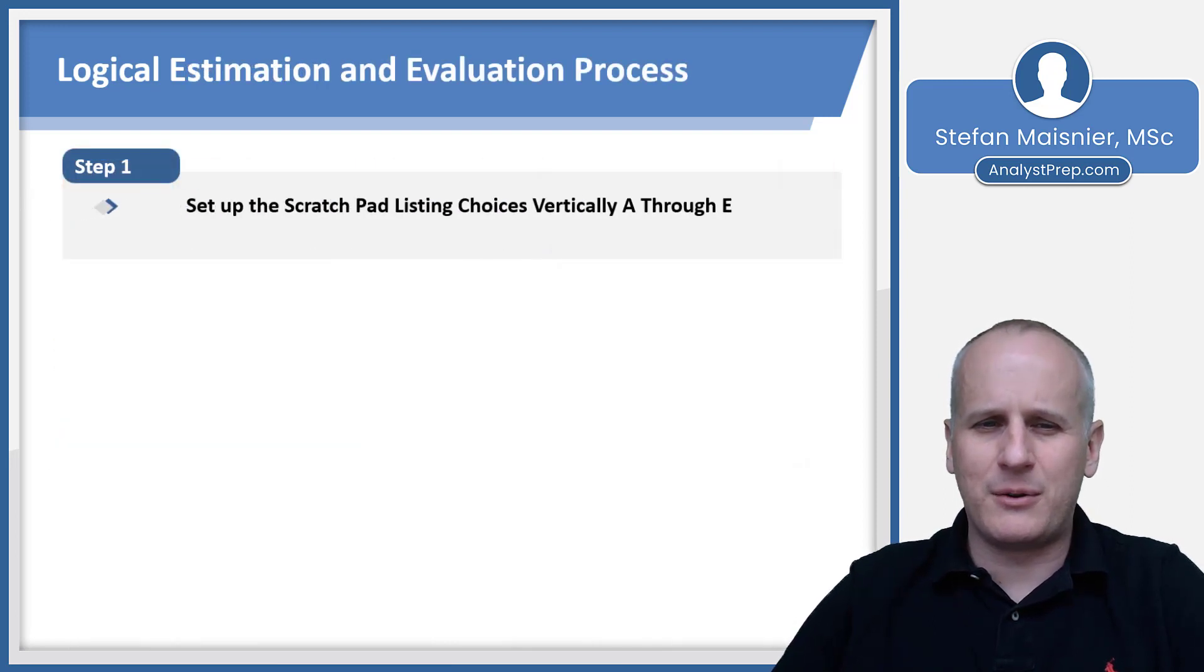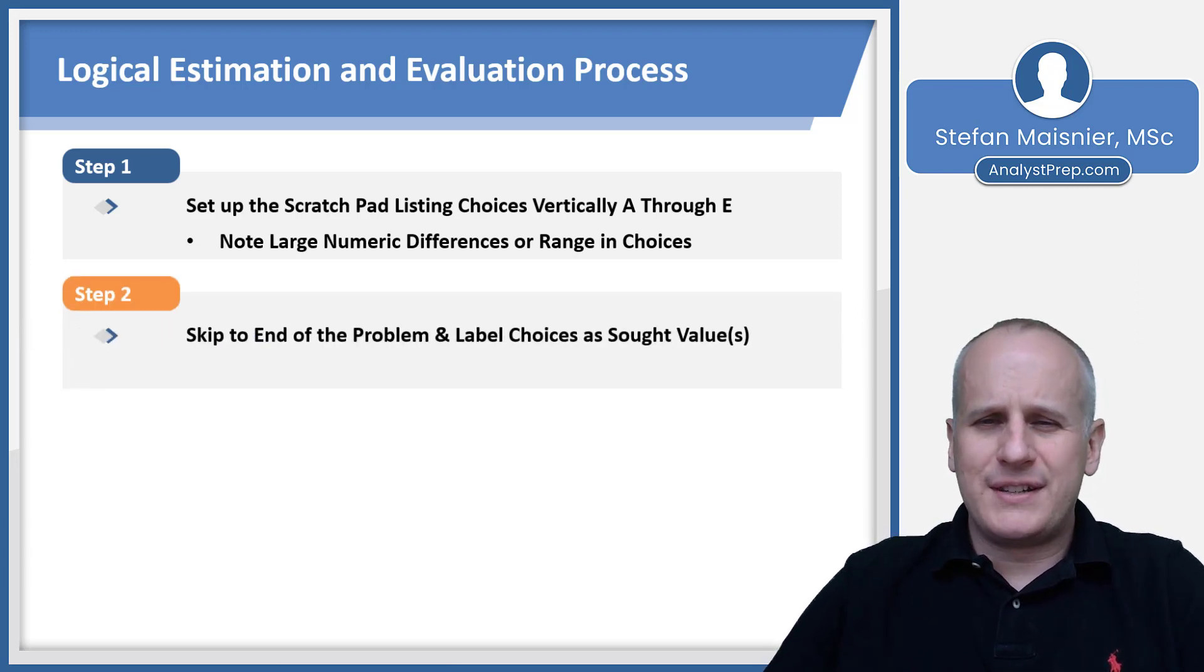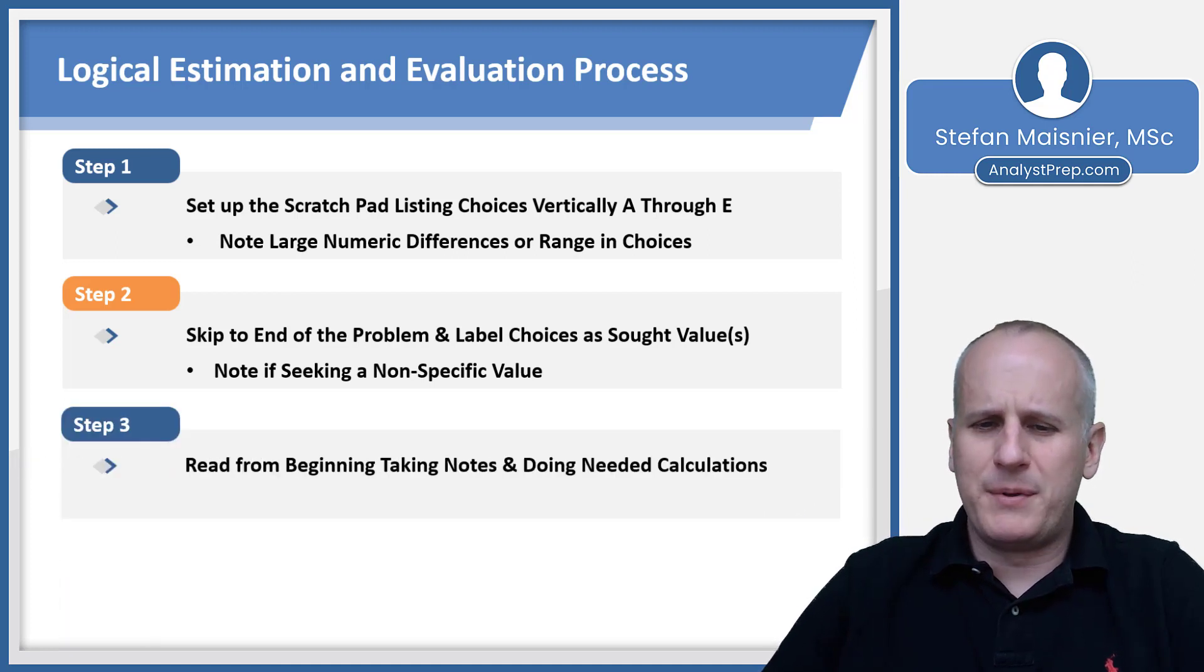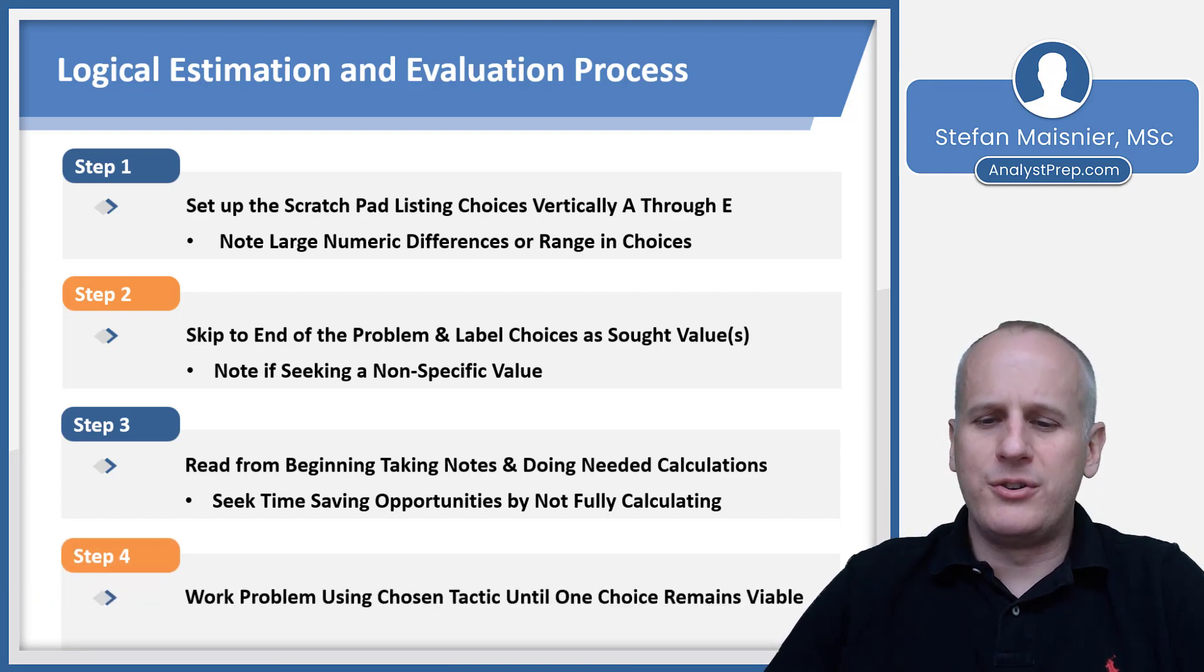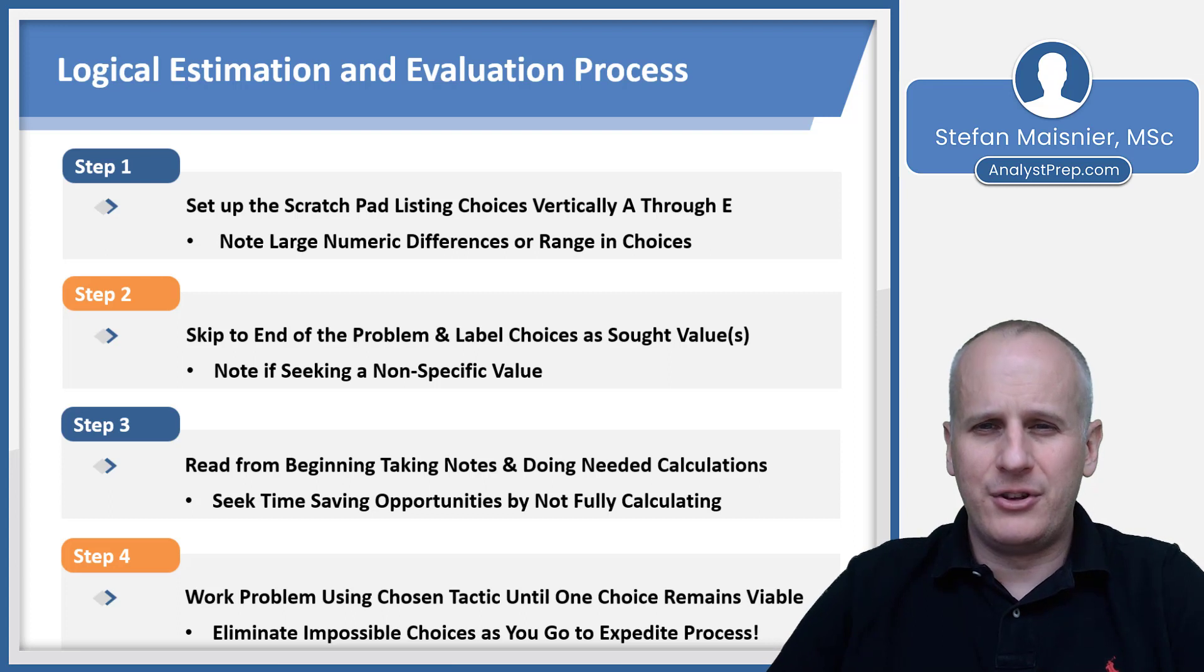So let's talk about our process for logical estimation and evaluation. As always, set the scratchpad listing the choices vertically A through E. You can note if there's large numeric differences or a range in the choices or just an abstract statement or an inexact value. Then you want to skip to the end, label the choices of the sought value. If you've got real numbers, you can put them in there. If you don't, don't write it out. You don't need to include the longer statements or the longer ranges. But you do want to note if you're seeking a non-specific value. Step three: read from the beginning, taking notes and doing needed calculations as you go. Seek time-saving opportunities by not fully calculating as a default. Step four: work the problem using your chosen tactic until one choice remains viable, and you can eliminate impossible choices as you go to expedite this process at any point on any problem solving question in the quantitative reasoning section of the GMAT focus edition.